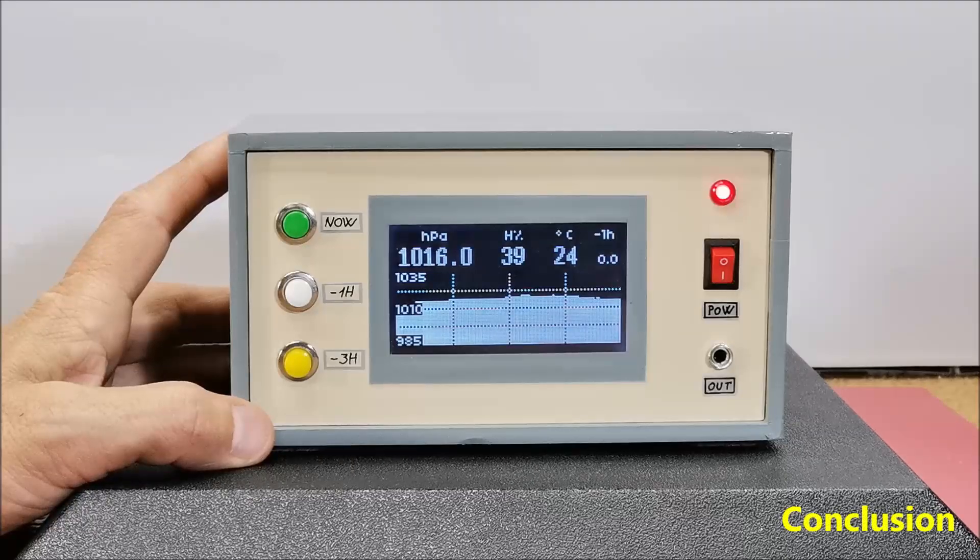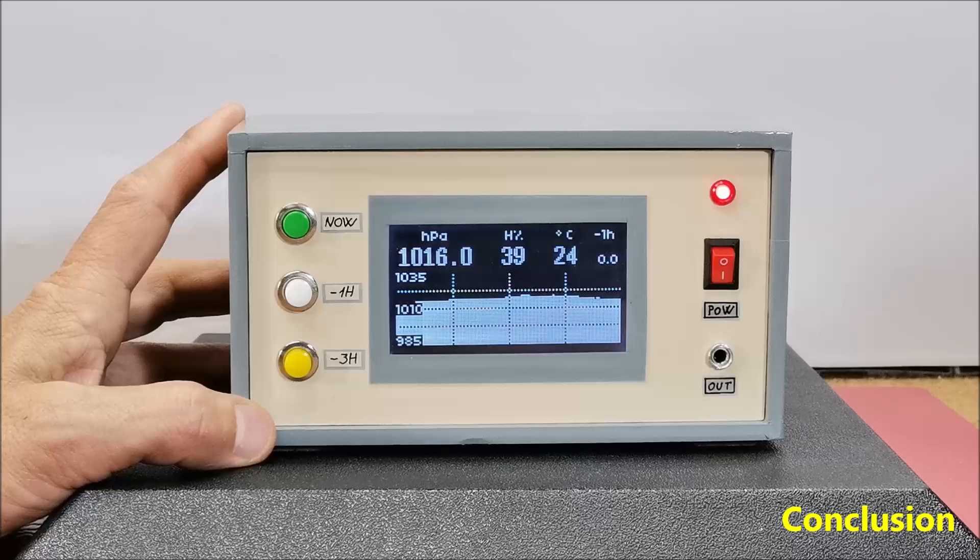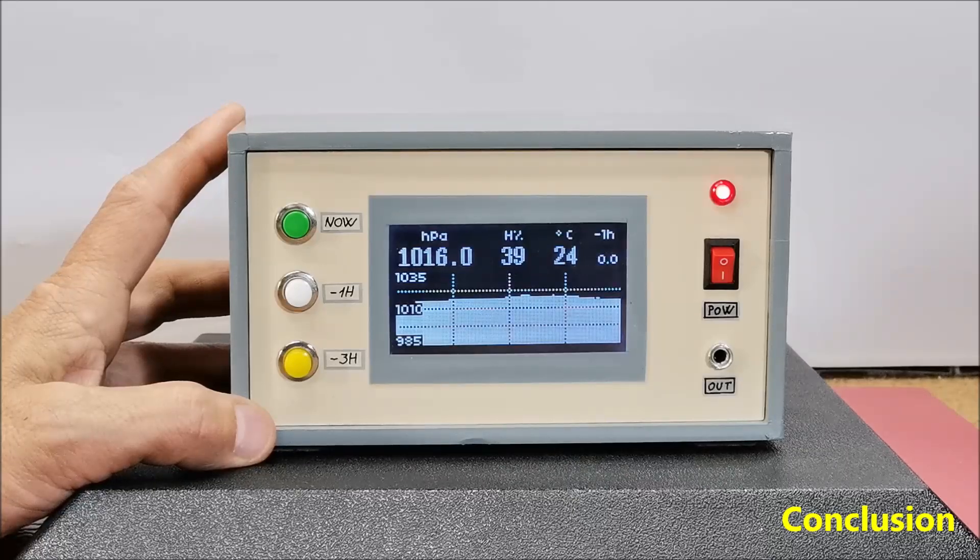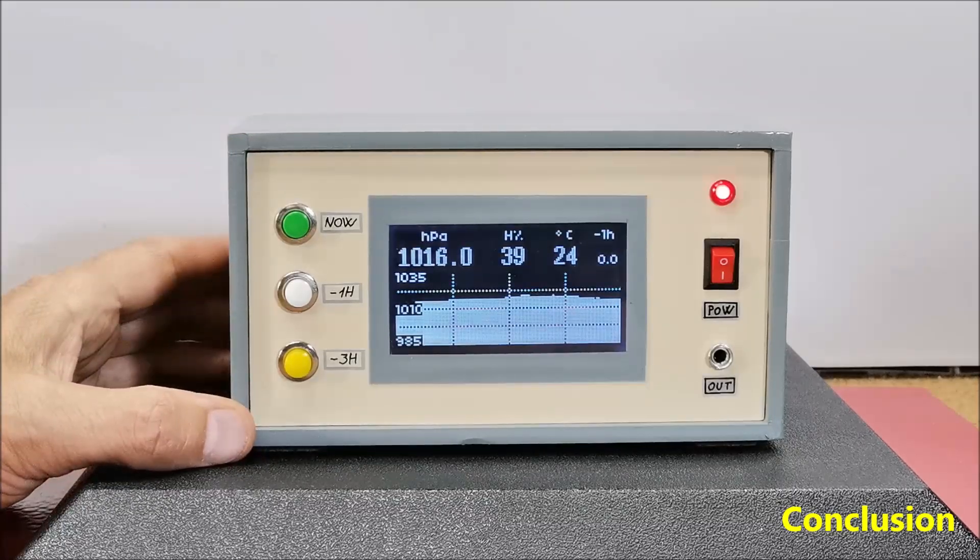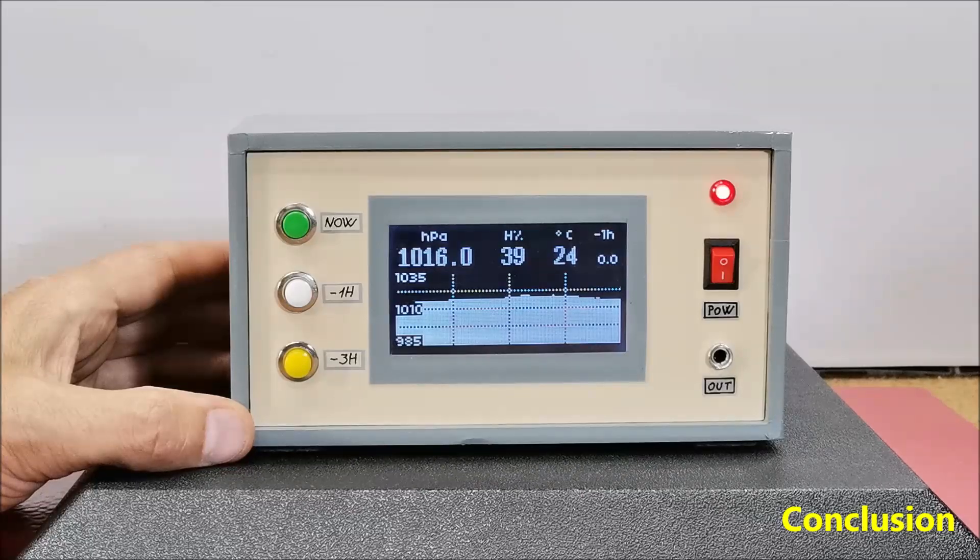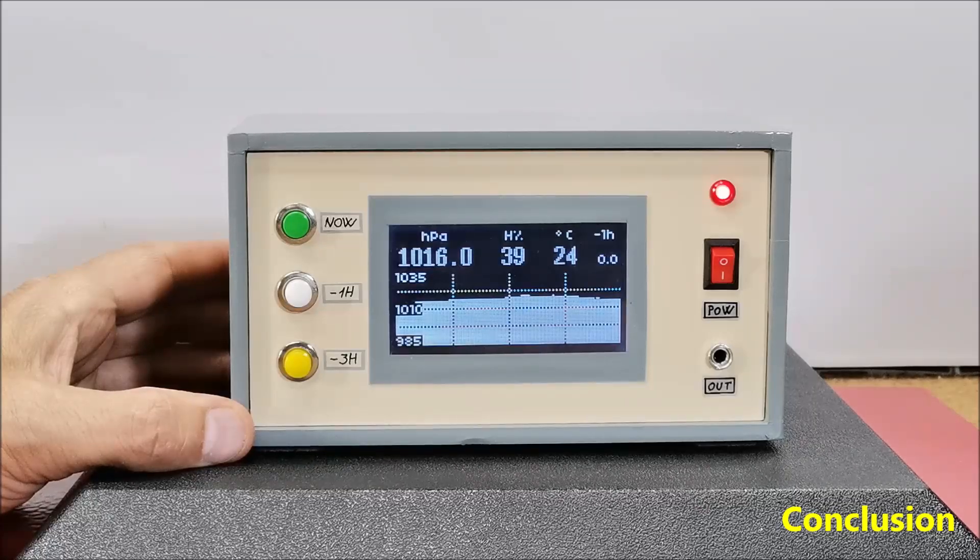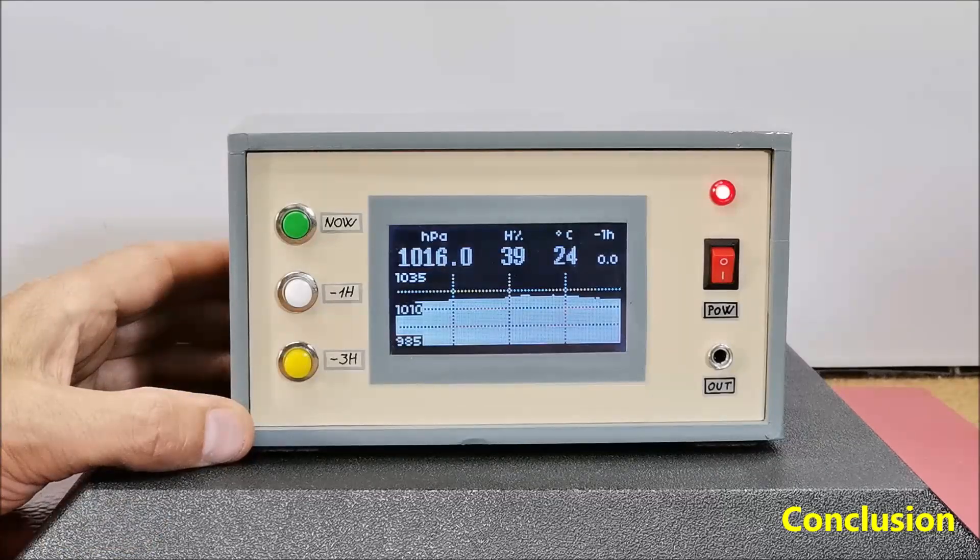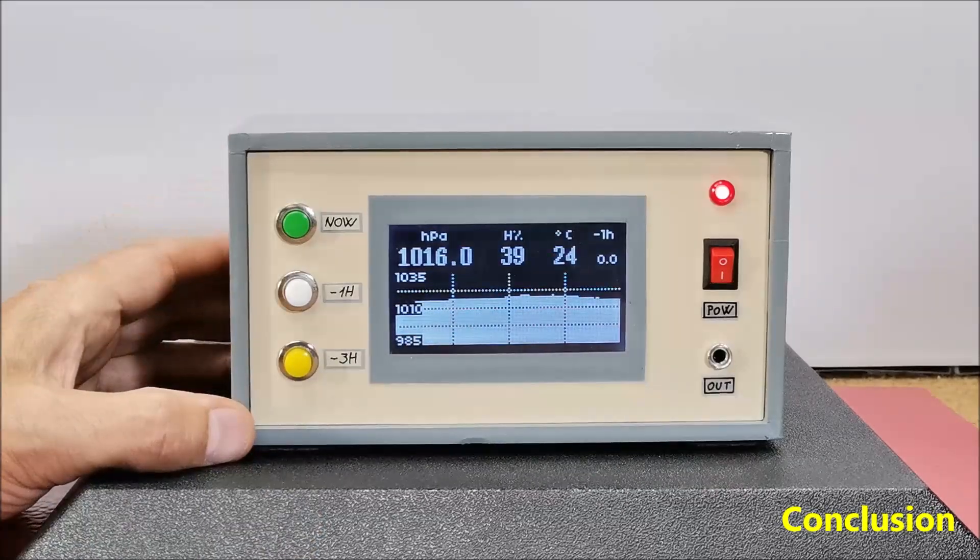And finally a short conclusion, this is a modern digital interpretation of a traditional barograph that displays real time atmospheric pressure trends over a 24 hour period using a high precision BME 280 sensor and ESP32 microcontroller board. The device features a 128 on 64 LCD display showing current barometric pressure, temperature, humidity and a detailed pressure history graph making it perfect for weather monitoring and forecasting.